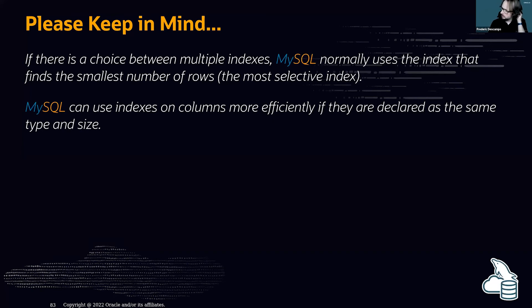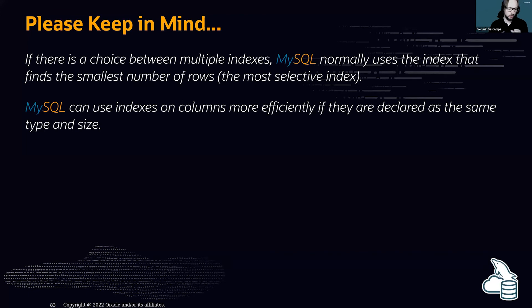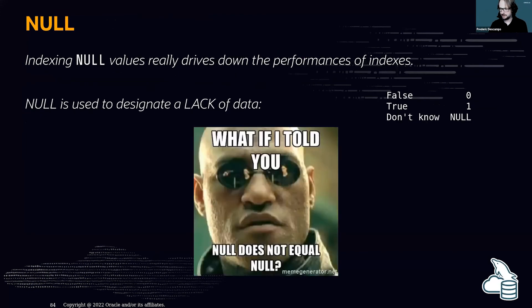For joins, performance is better when you join two tables on columns that are declared with the same type and size.